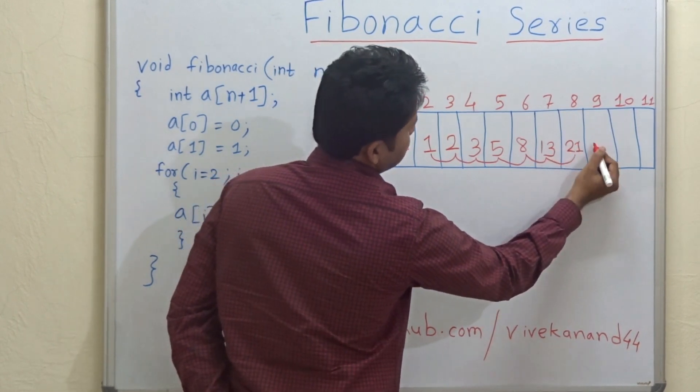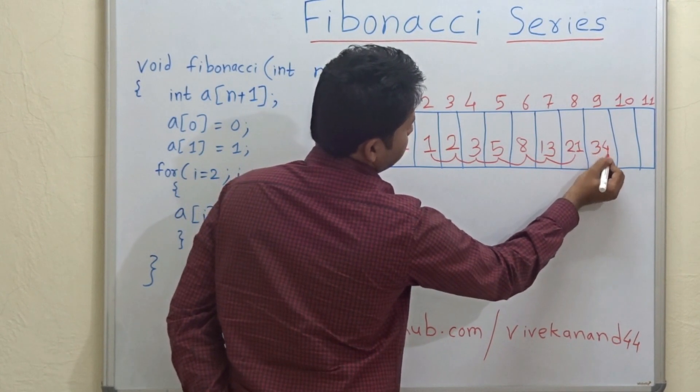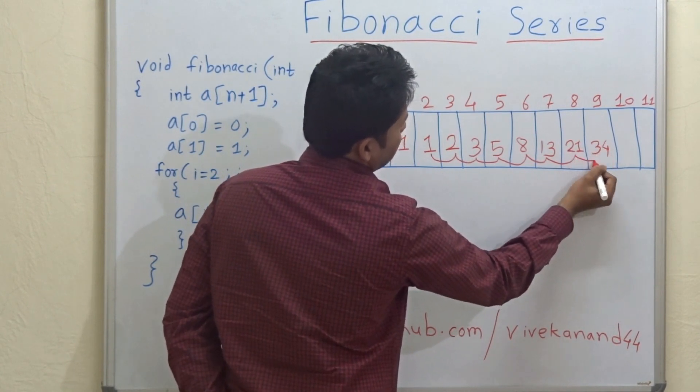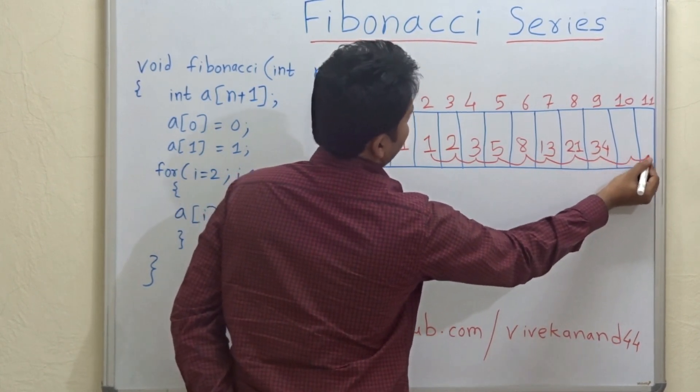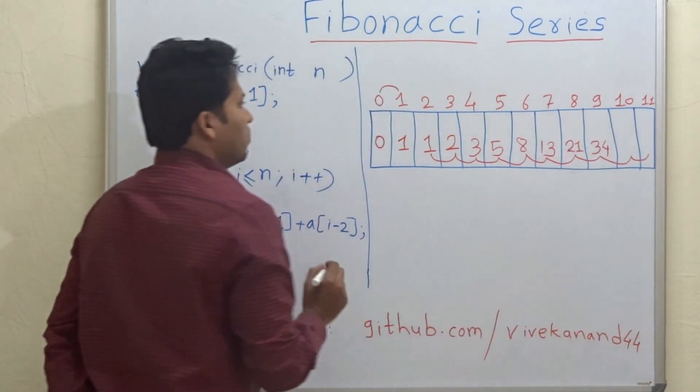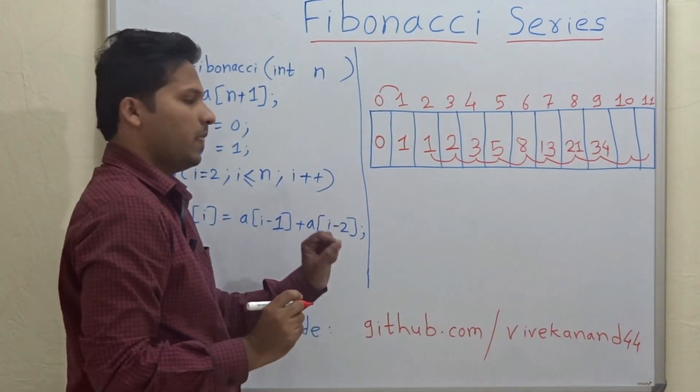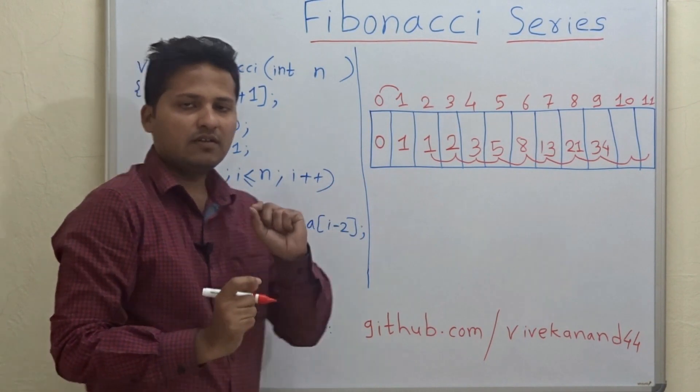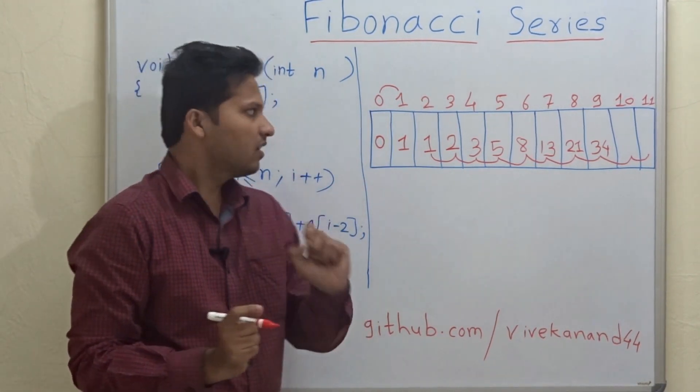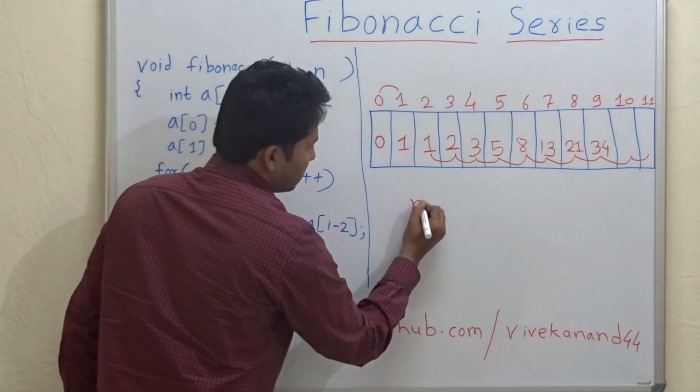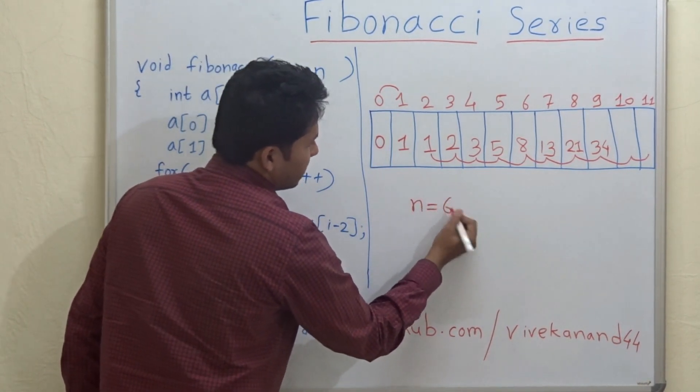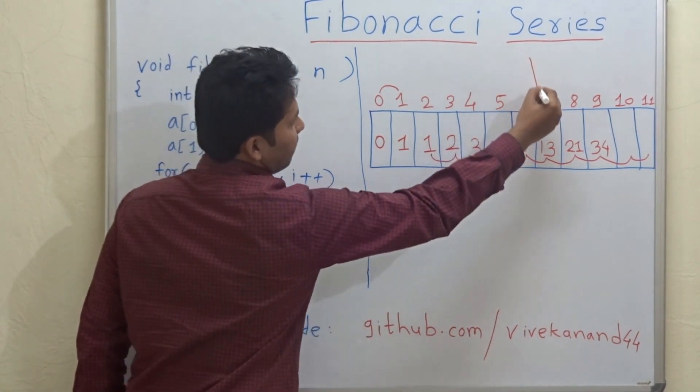And you have to go on like this. So whatever is n—n means the end of the Fibonacci series. If your n is equal to 6, this means you have to end here.